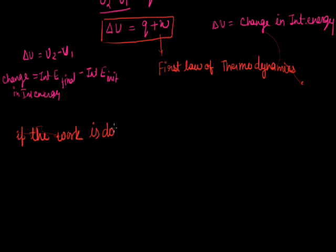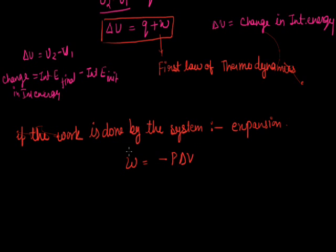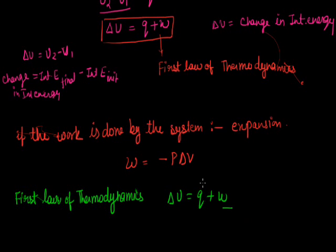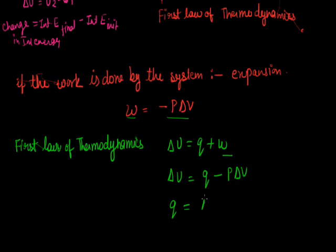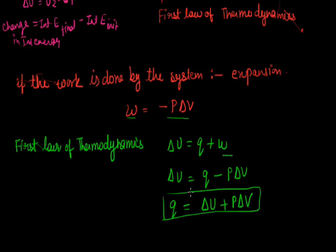If the work is done by the system — that is the case of expansion — then W equals minus P delta V. If we put this value of work into the equation derived for the first law of thermodynamics, delta U equals Q plus W, and the work here is expansion, which is minus P delta V, we get delta U equals Q minus P delta V. So we can also write this as Q equals delta U plus P delta V. In the case of expansion, the first law of thermodynamics gives us Q equals delta U plus P delta V.